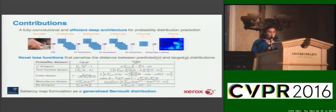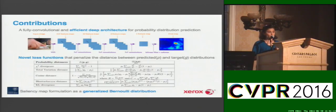The contributions include an efficient end-to-end deep architecture for predicting saliency maps as probability distributions. We use a VGG-net for the first part of the pipeline, pre-trained on the ImageNet dataset. We then use a series of convolutions to expand the effective receptive field, since saliency is a global property and not a local one. At the end, we perform bilinear interpolation followed by softmax normalization.